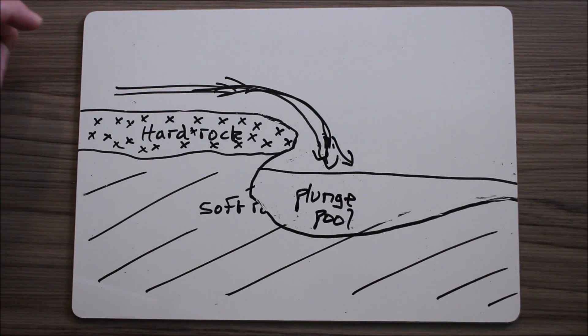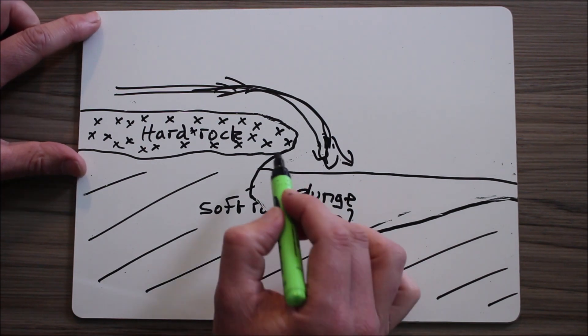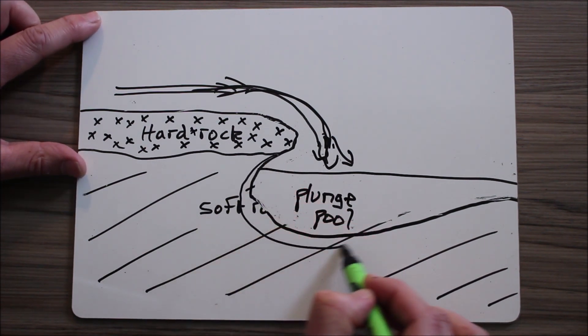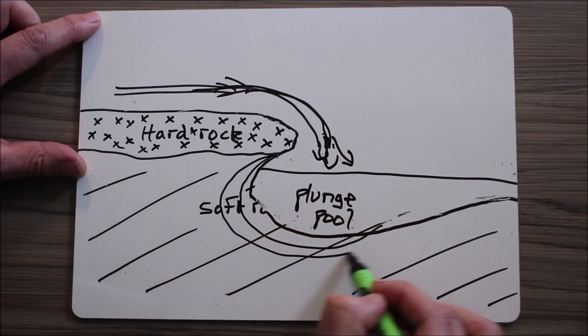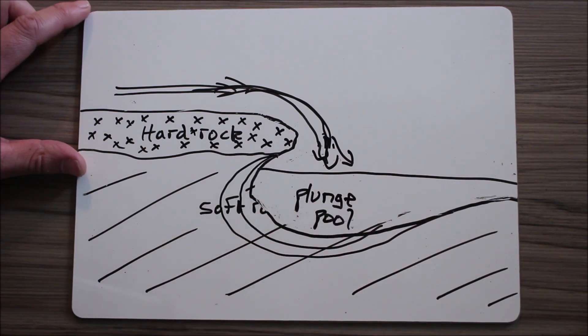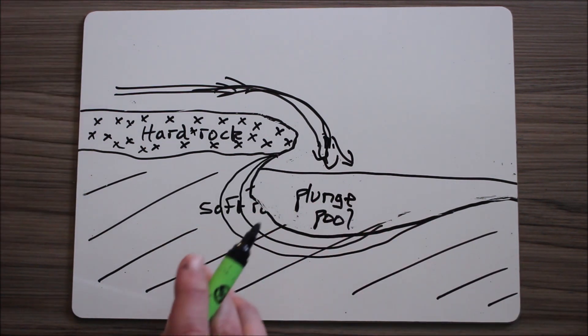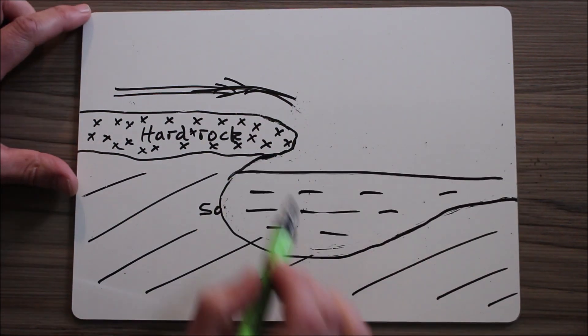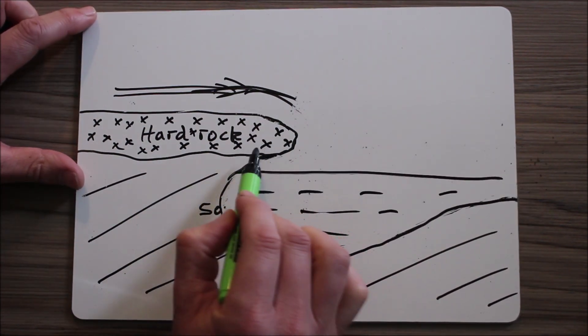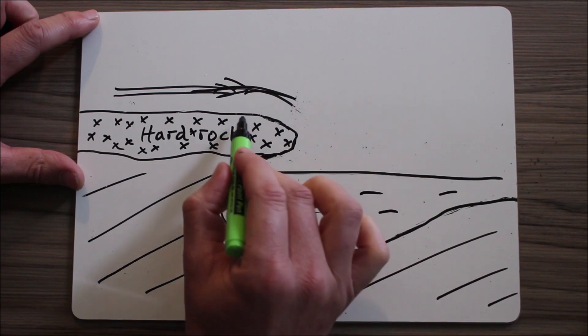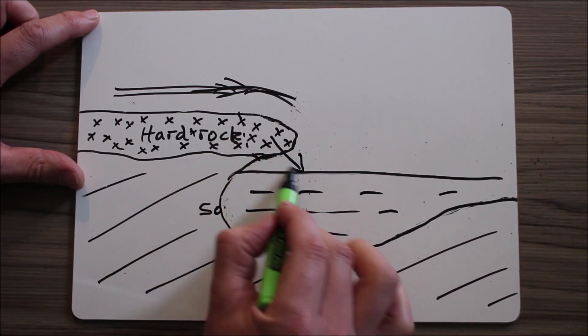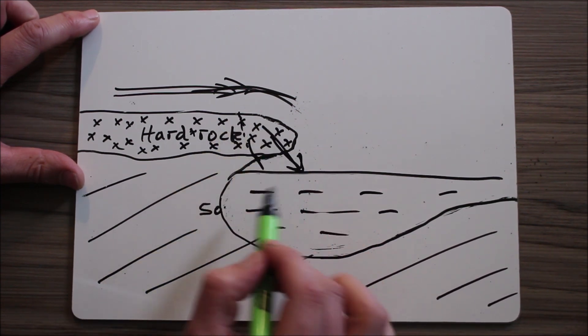If this continues to be undercut like so over the years, eventually the hard rock will be left totally unsupported, and the whole lot might collapse and fall into the river because there's nothing underneath to support it.